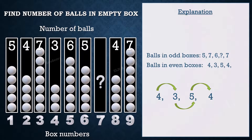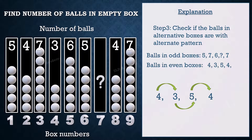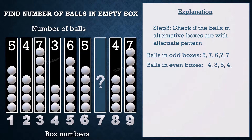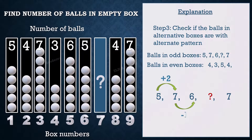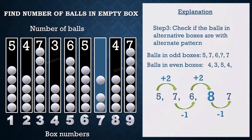Now let us proceed with Step 3: Check if balls in alternative boxes are with an alternative pattern. Let us check if the same pattern applies to odd boxes as well. The number of balls in the 7th box is 8, and the answer is 8.